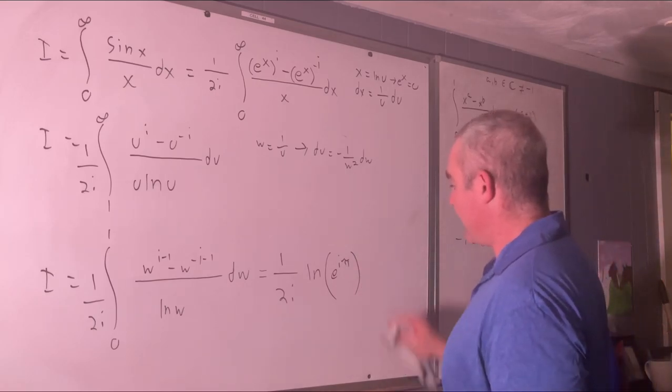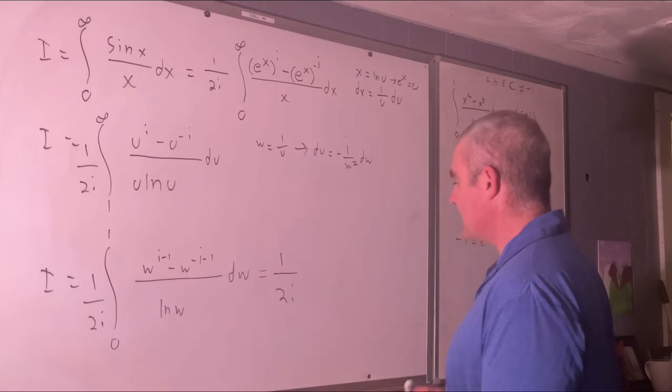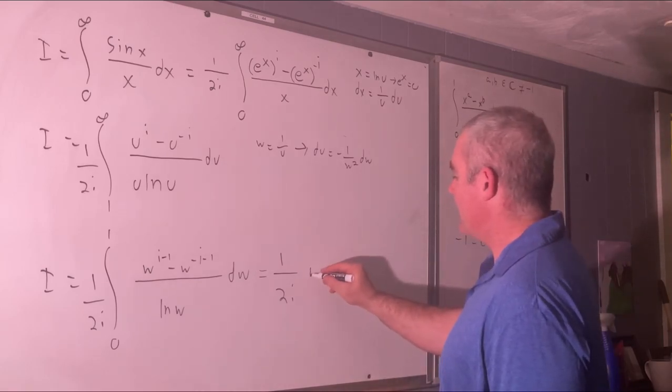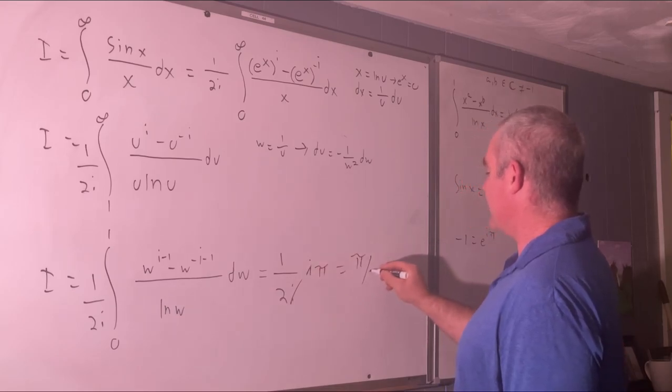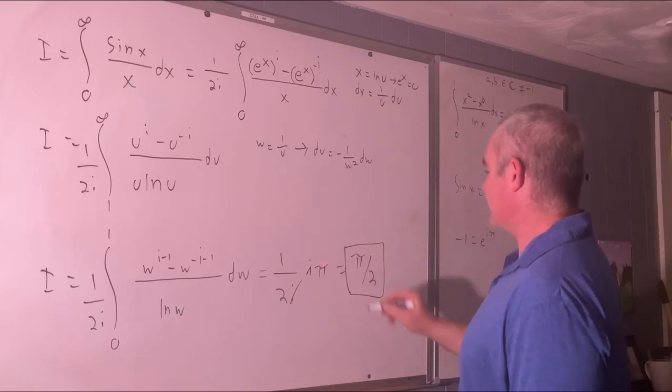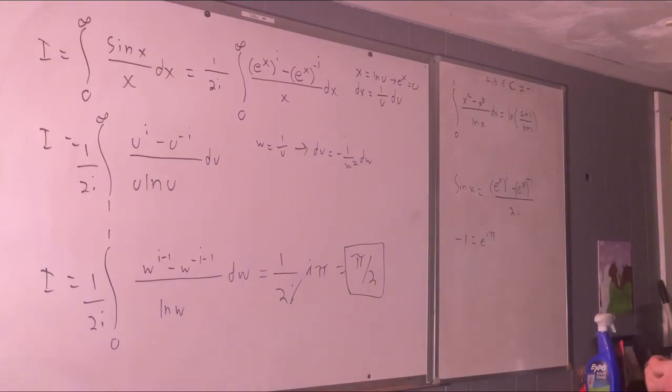Cancel, cancel is equal to pi over 2. Just like we expected. And there you go. I believe that's my fifth different method for solving that integral using Feynman integration.